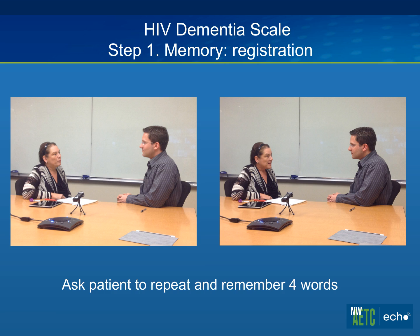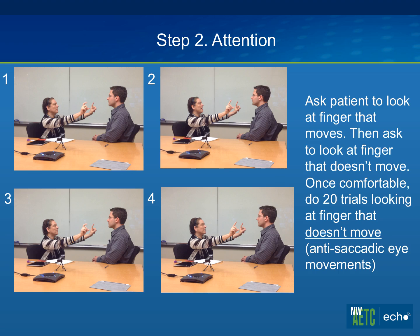The first thing we test is memory and registration. Brian, I'm going to give you four words to remember: dog, hat, green, and peach. Could you repeat that for me? Dog, hat, green, peach. Great. Now I'd like you to remember that — I'm going to ask you again in a little while.